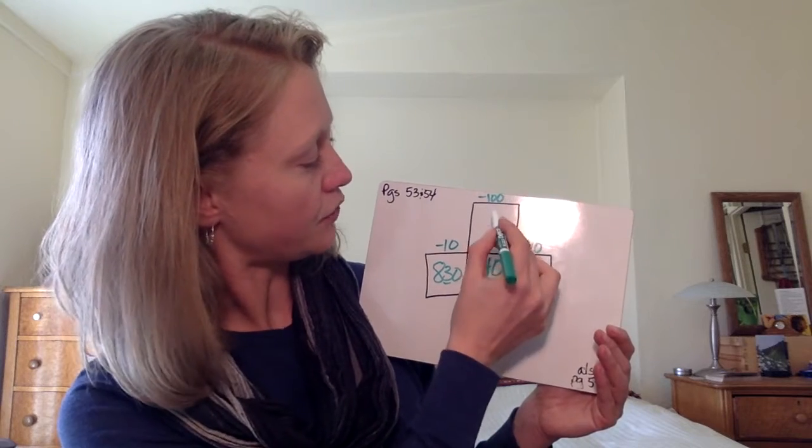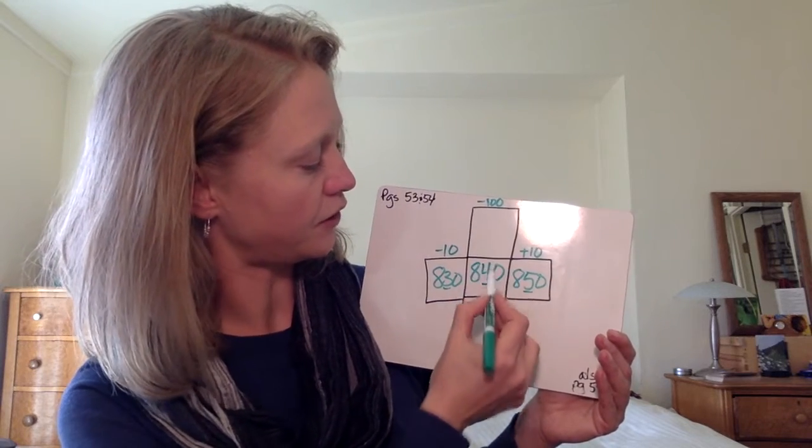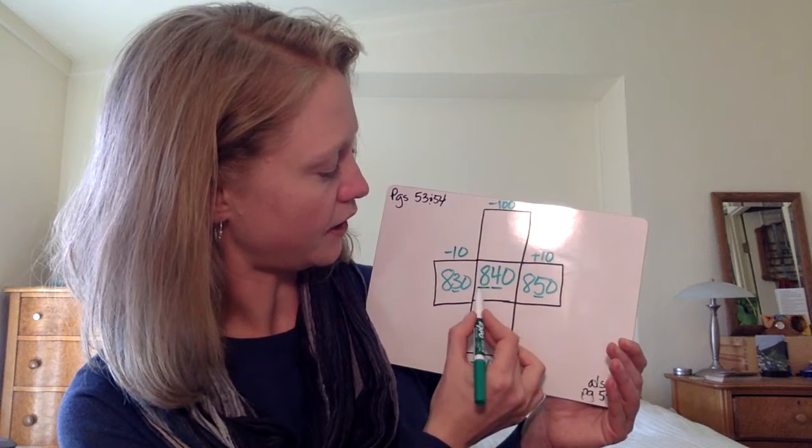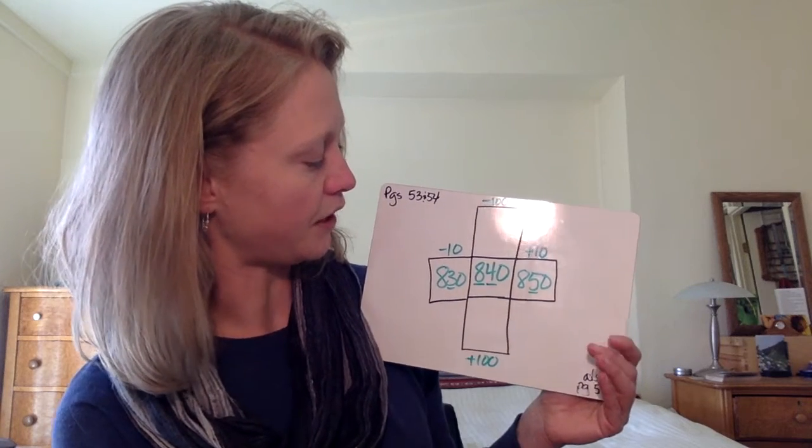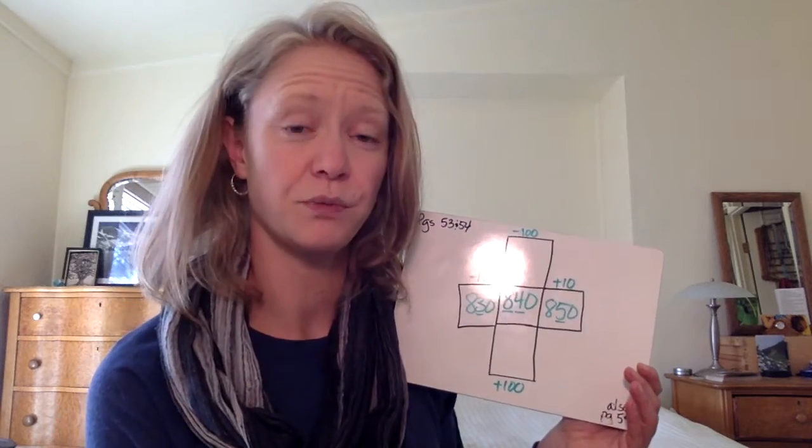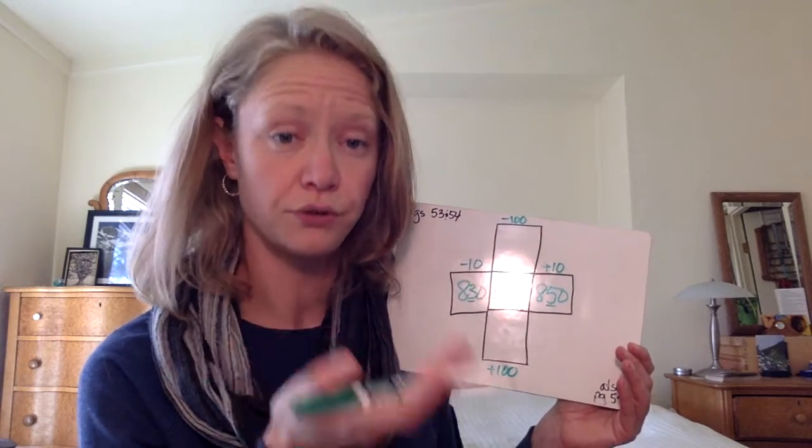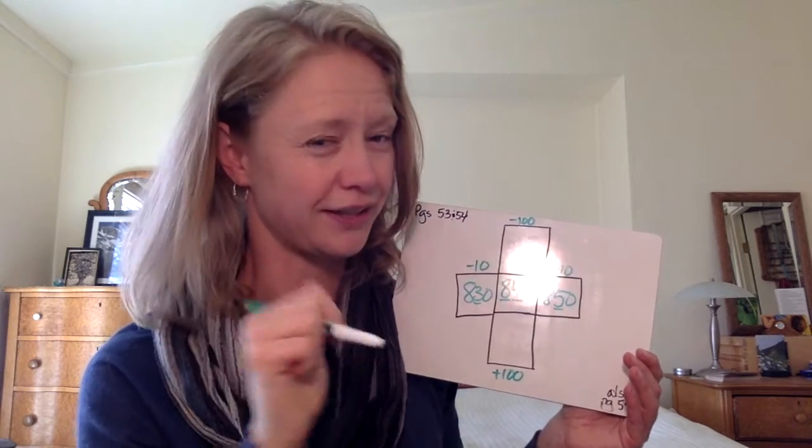Now with the hundreds, I'm going to subtract a hundred or add a hundred. If I'm counting by hundreds, I'm looking at my hundreds place. Counting by hundreds would mean starting at 100, 200, 300, 400. You get the pattern.